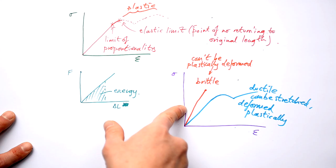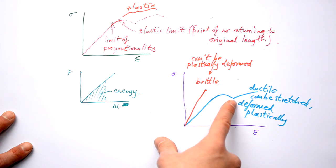And it makes sense that brittle materials have a very high gradient, therefore a very high Young's modulus for their elastic deformation. Ductile materials, they can be stretched more easily and they can be stretched plastically as well.